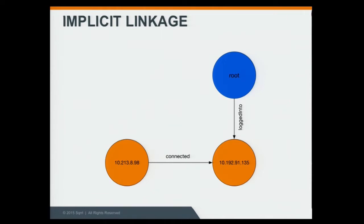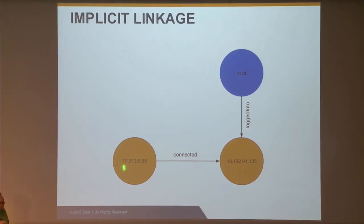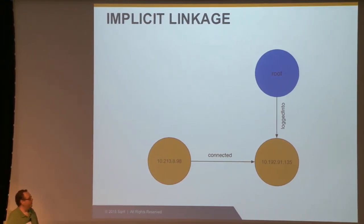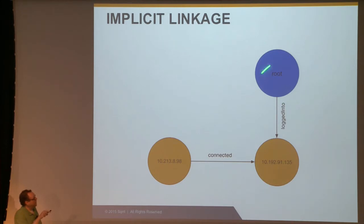If you were to look at this visually, you would see a diagram with two hosts connected by a relationship. These two entities, or nodes, are connected with a relationship called 'connected' — they made a network connection from one to the other. There's another entity up here which is the root username, and it's related to this entity with a 'logged into' relationship. So here we've diagrammed what we saw in the two syslog entries more visually, showing the story of this host connecting to this host and logging in with this username.